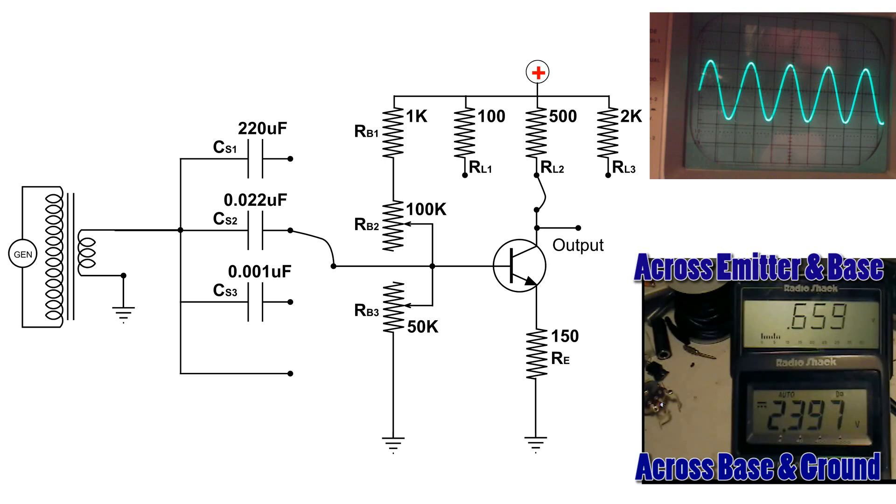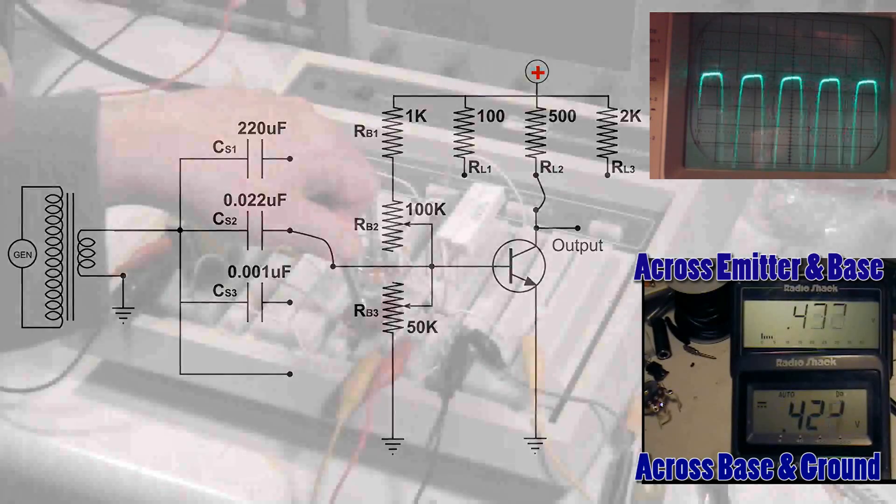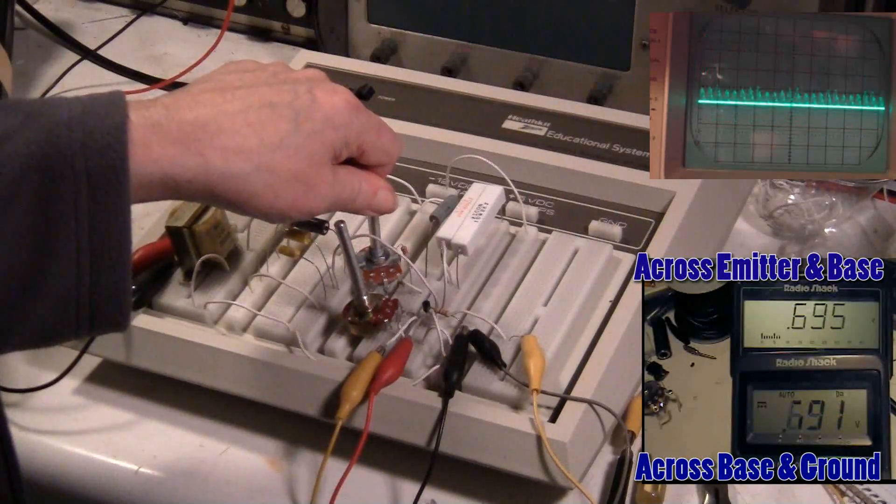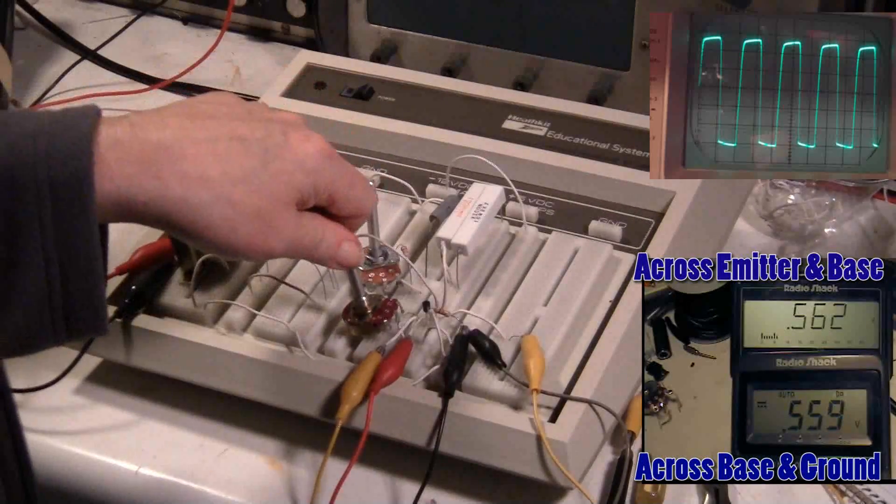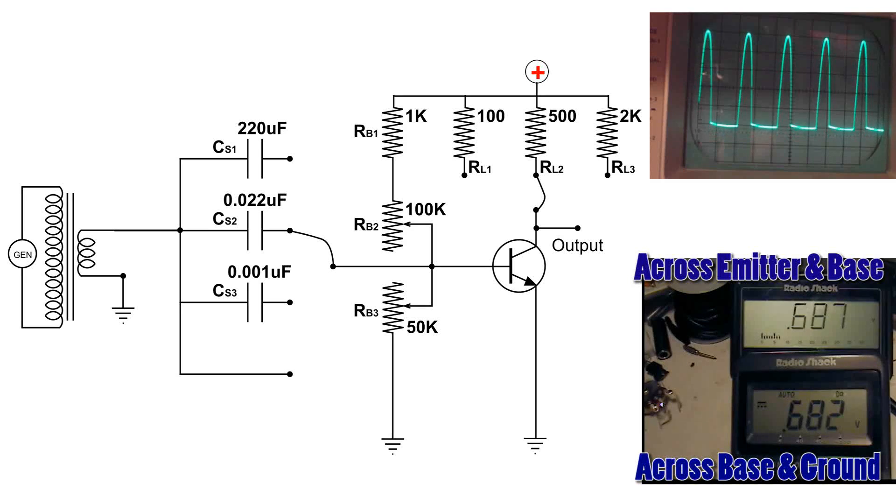Now let me short out the emitter resistor. Okay, let's see. I don't know if we'll be able to adjust anything in here or not. It's very touchy. Wow. Well, I can make a nice square wave out of this, but making a sine wave might not happen here. And it all has to do with biasing that resistor or transistor correctly.